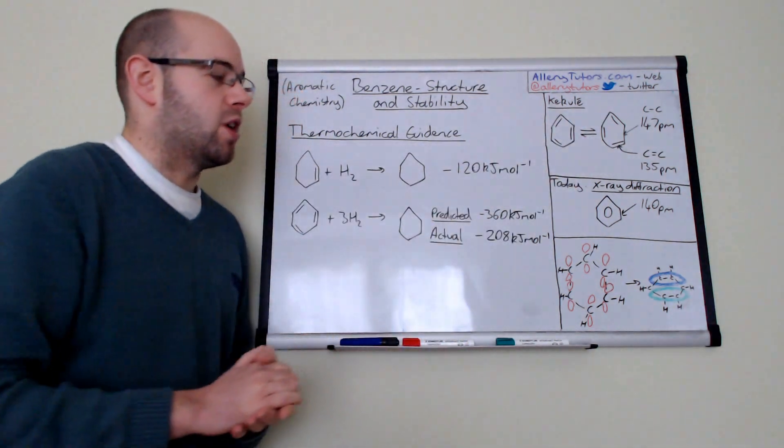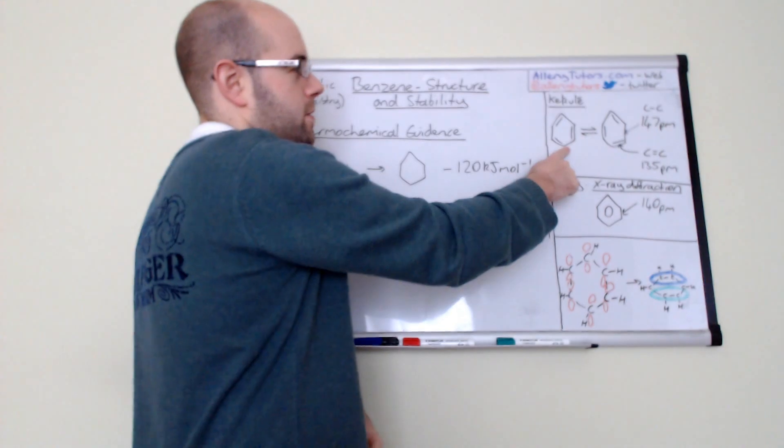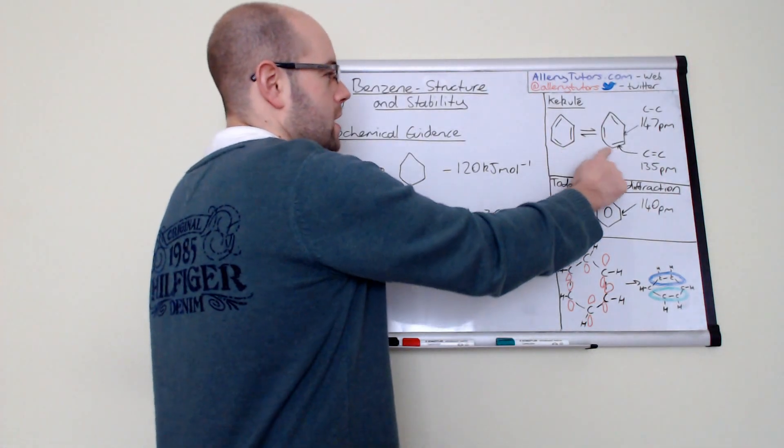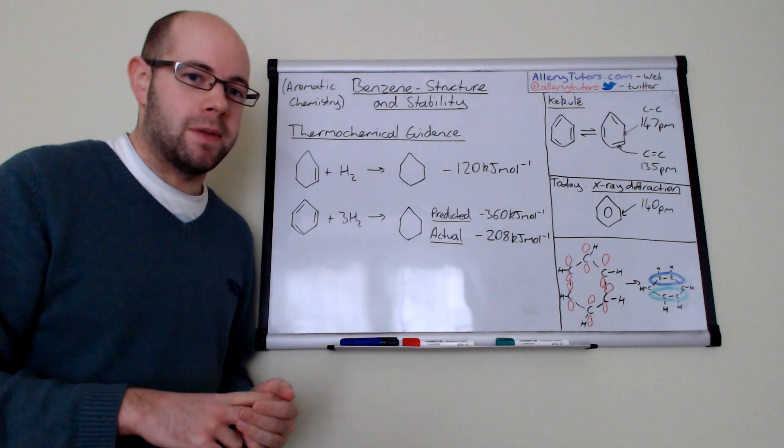What he actually later proposed was that we had an oscillating sequence where we have the double bonds oscillating between here and here, but there were still a few problems later on.